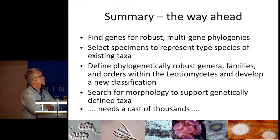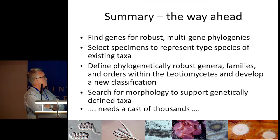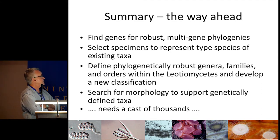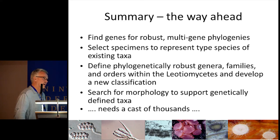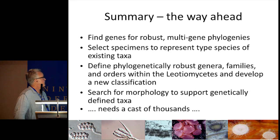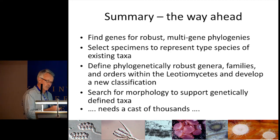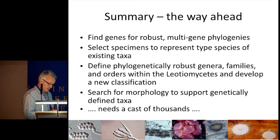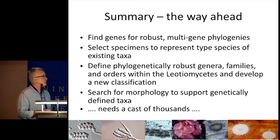In summary, the way ahead: first, find genes for robust multi-gene phylogenies; select specimens to represent type species of the existing taxa; use that data to define phylogenetically robust genera, families, and orders within the Leotiomycetes; develop a new classification based on those phylogenies — which will keep the users who require DNA-based identification tools happy, and they're the ones we've got to keep happy. Then we can search for morphology that supports the genetically defined taxa, so that sometimes it might be more convenient to just glance at a specimen and say 'yes, it's that family or genus' rather than generate a DNA sequence. It's a big job with lots of taxa and genera to deal with, and so as the last bullet says, it needs a cast of thousands.